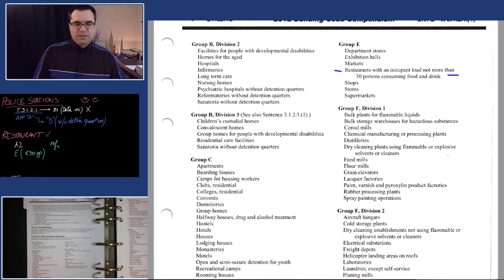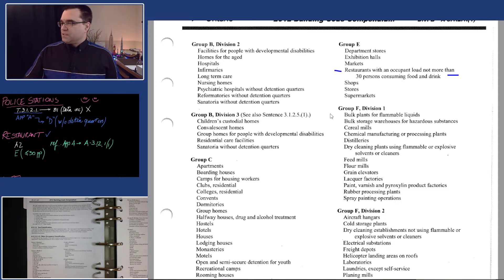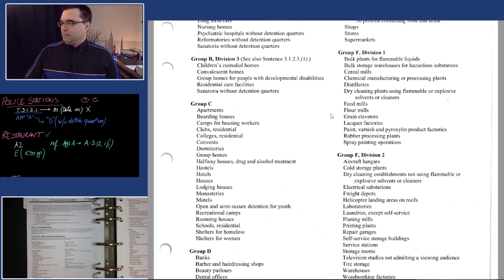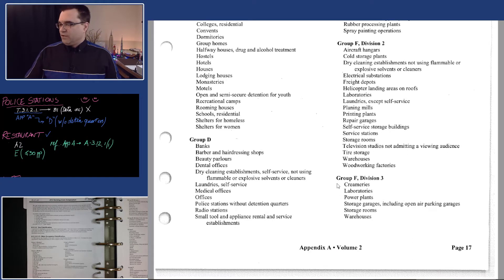I want to make a point that the reference for this is under Appendix A, specifically A 3.1.2.1, because referencing is very important. Let's keep going. Anything under F1 for restaurants? No. F2? No.